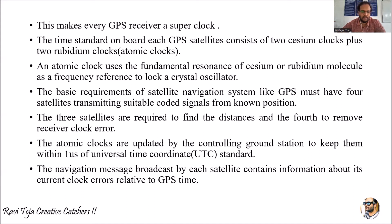The basic requirements of satellite navigation like GPS: generally three satellites are sufficient for GPS to function, but four satellites are used for the navigation system. Among these four satellites, three are required to find the distance between each satellite and the receiver. The fourth satellite removes unwanted receiver clock errors.